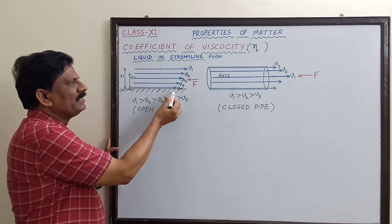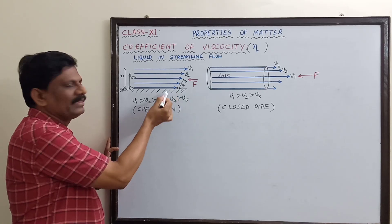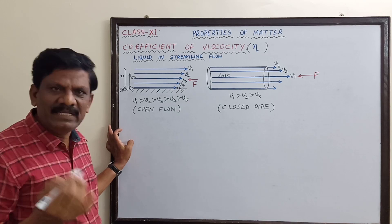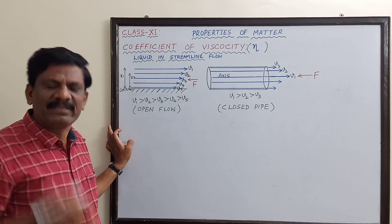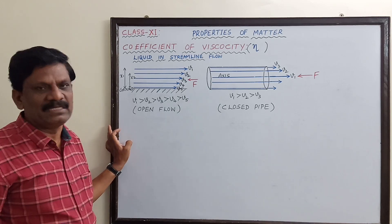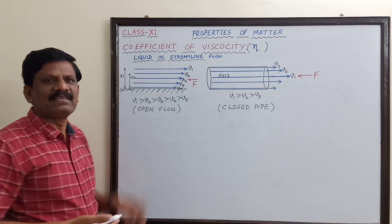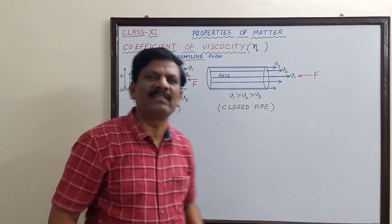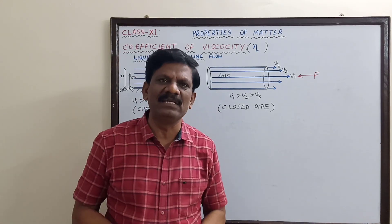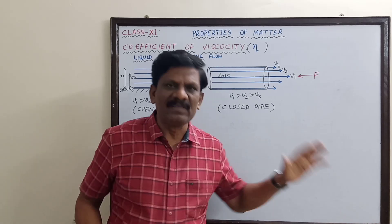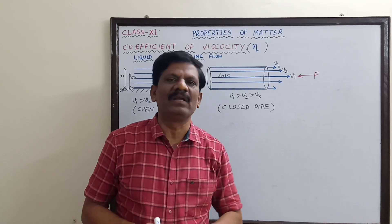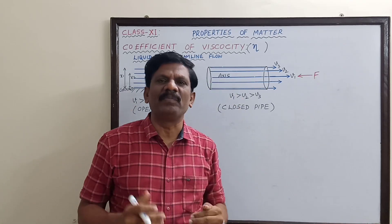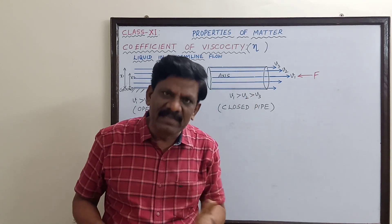The last layer in contact with the ground will have nearly zero velocity. So in open surface flow, the top surface has the highest velocity, the bottom has zero velocity, and the layers in between have gradually decreasing velocity from top to bottom.